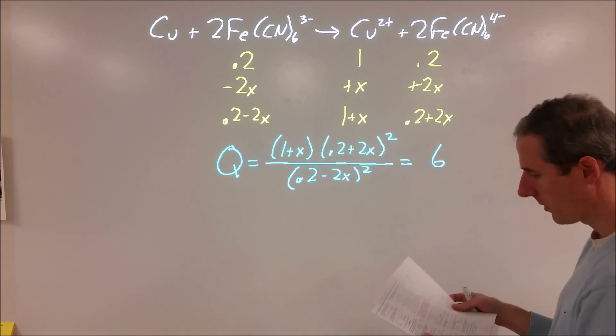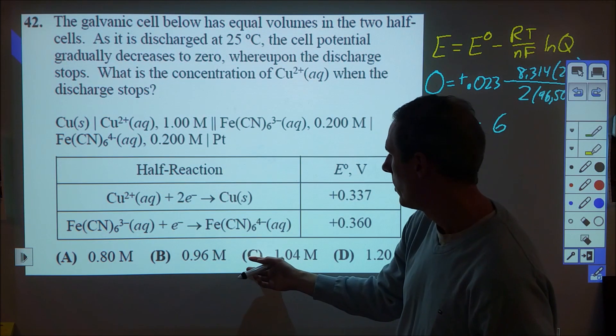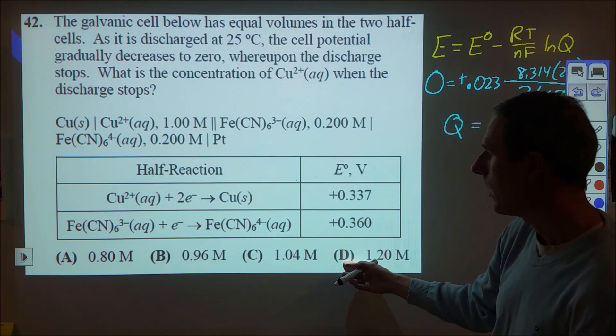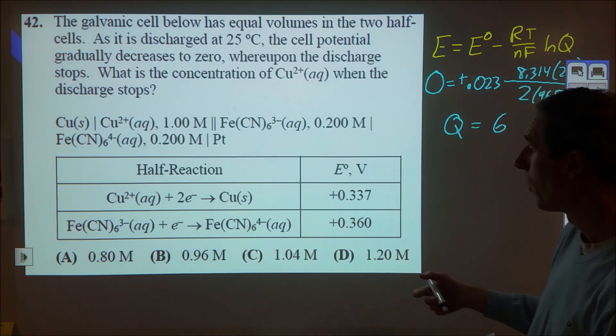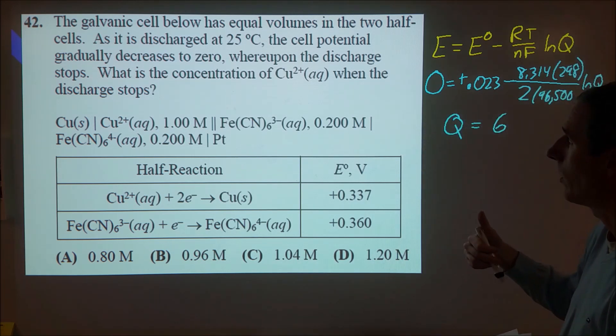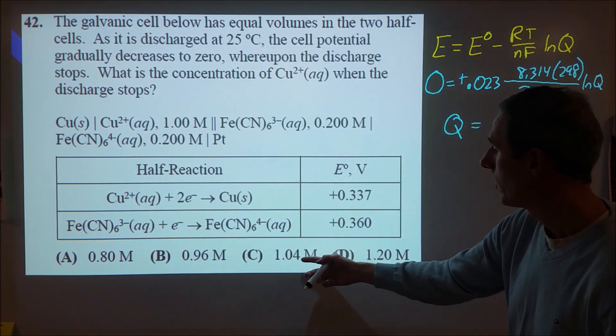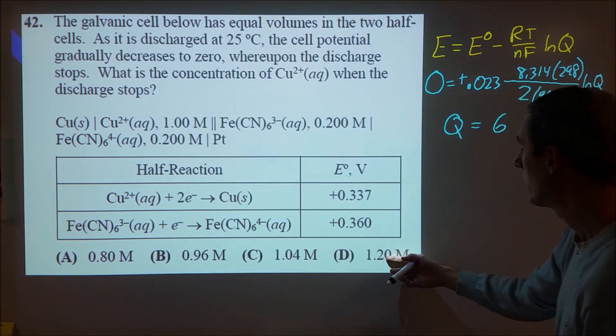So what I then did is I looked at the answer choices. And when you peek through at the answer choices, what you find is that the only possibilities are C and D, because we know that the reaction is going to proceed forward, because we start with a positive voltage. So we're going to see the concentration of copper ions go up. Since we've got this reversed, we're going to form our Cu2+. So it can either go up by 0.04, or it can go up by 0.2.